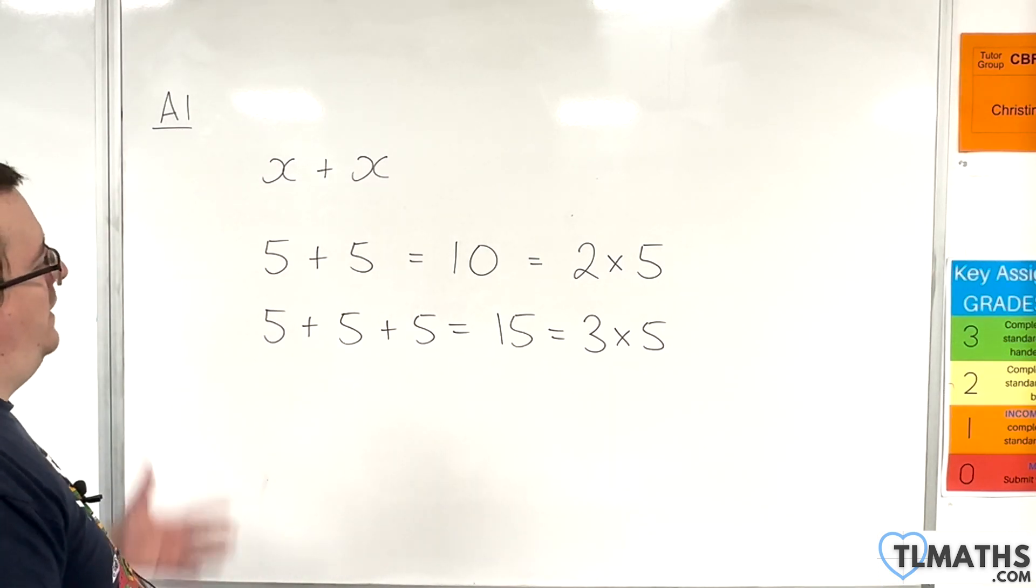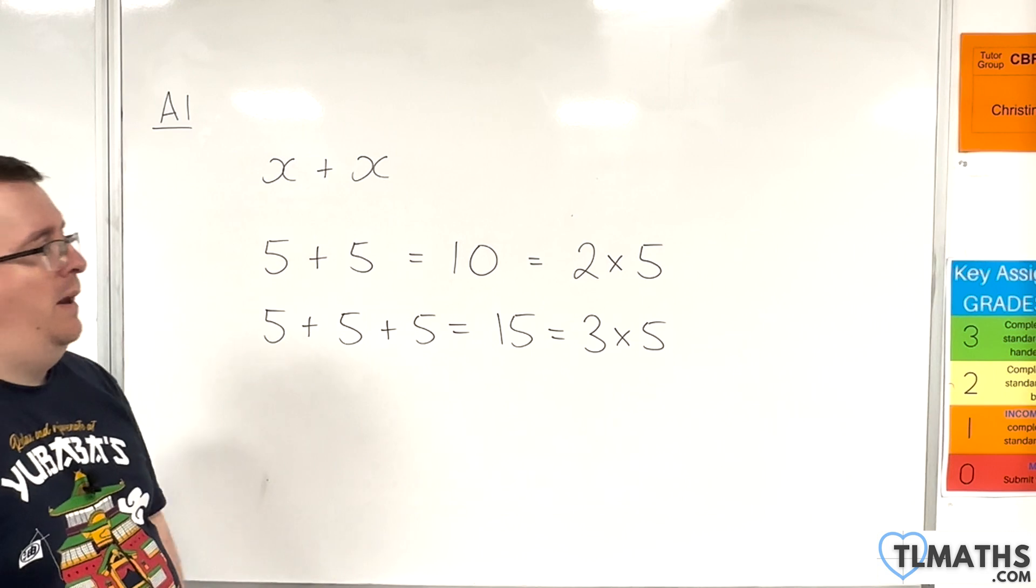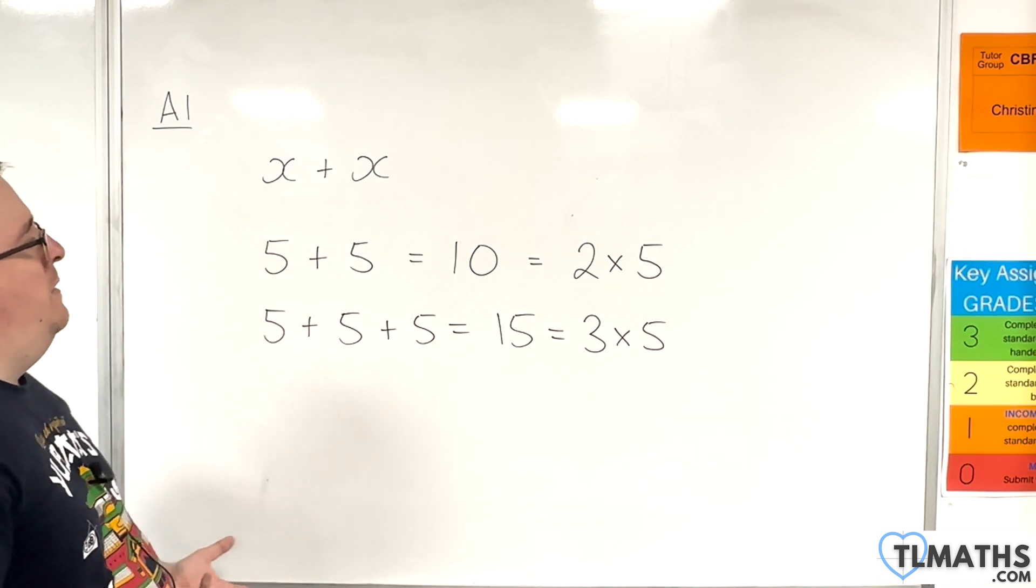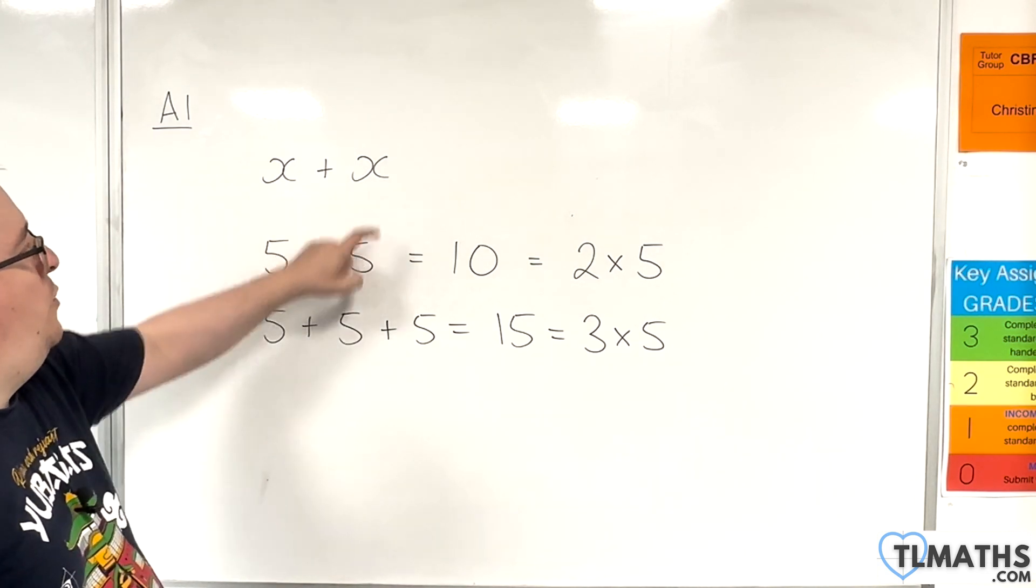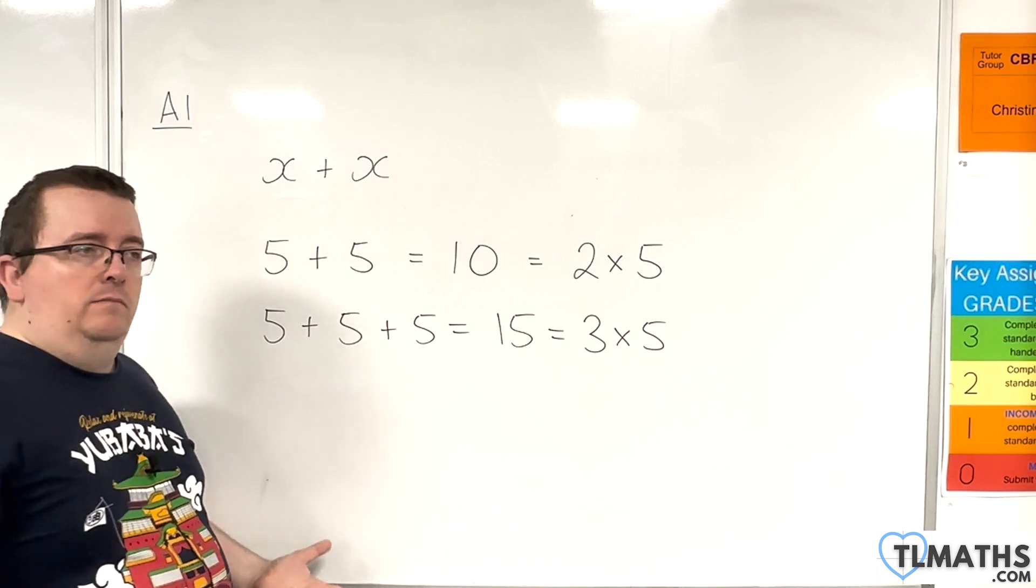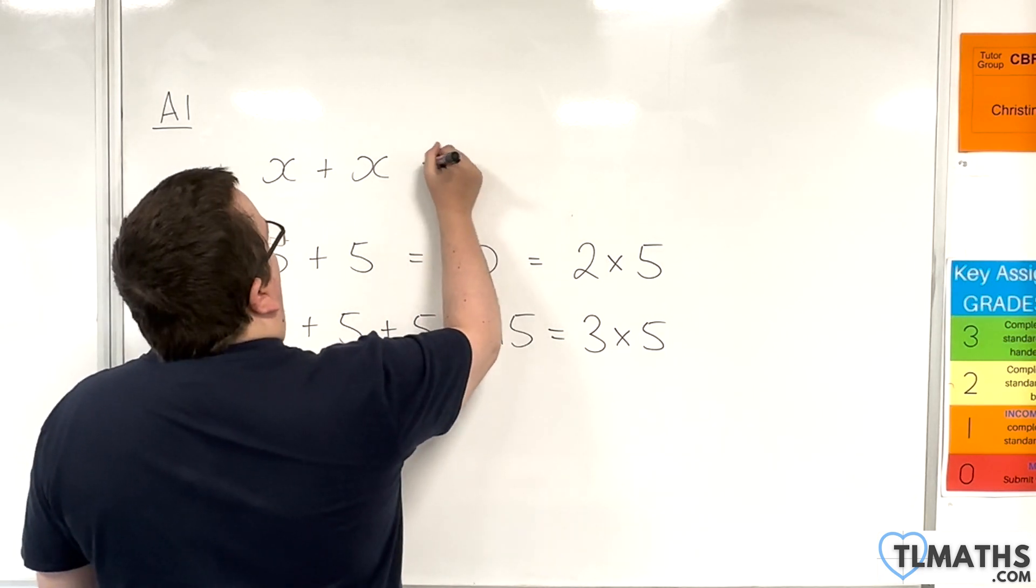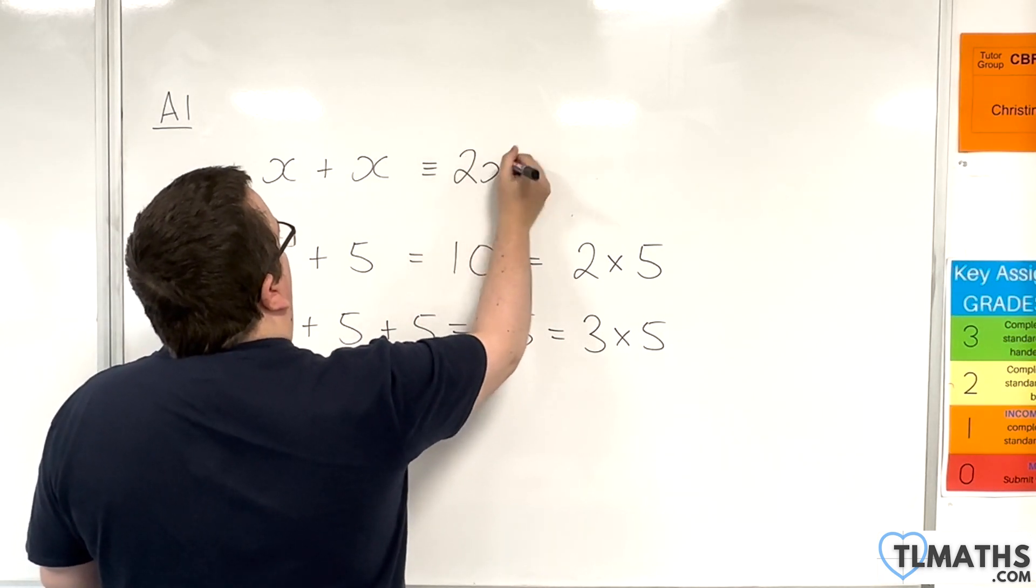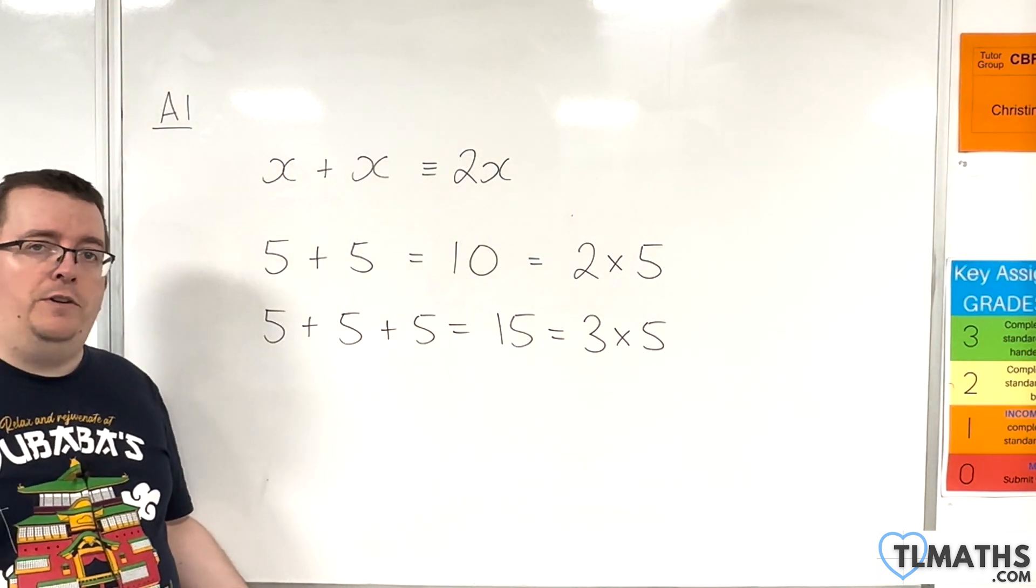So can we then think, okay, well, if I've got x plus x, then here I've got two x's being added together. So I could write that as precisely 2x, couldn't I? So x plus x is the same as 2x.